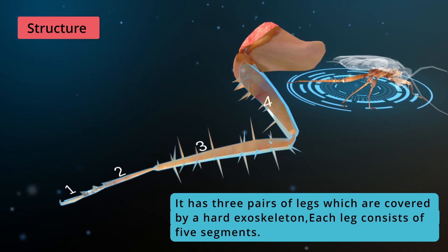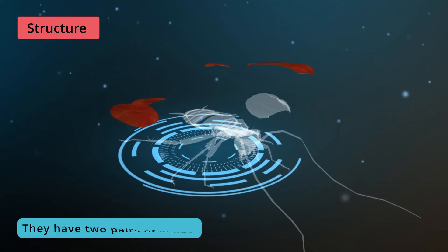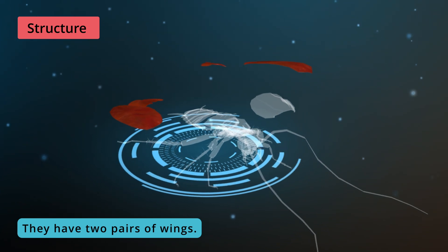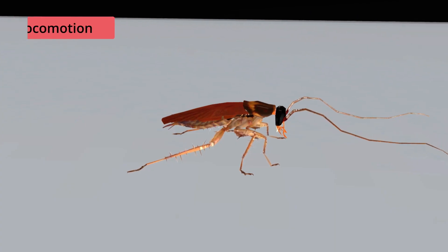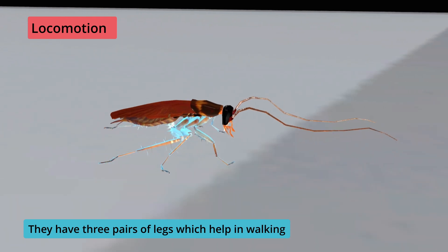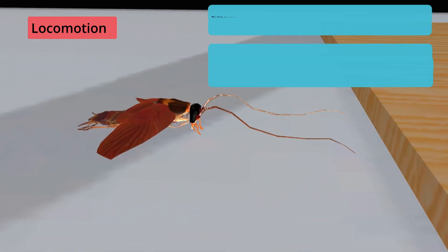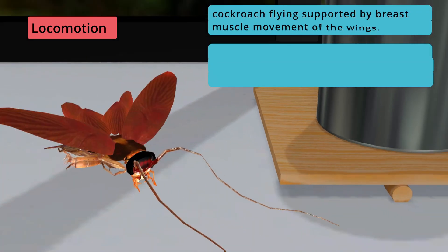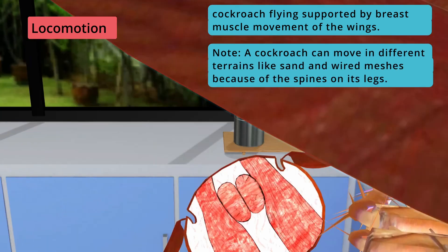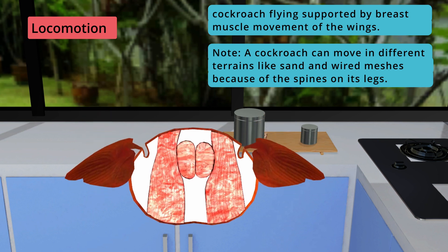Wings: they have two pairs of wings. Locomotion — walk: they have three pairs of legs which help in walking. Fly: cockroach flying is supported by breast muscle movement of the wings.